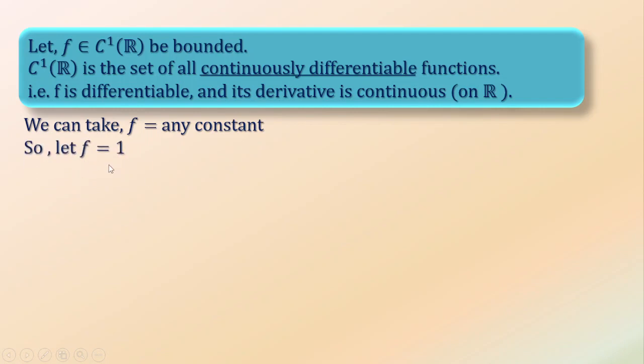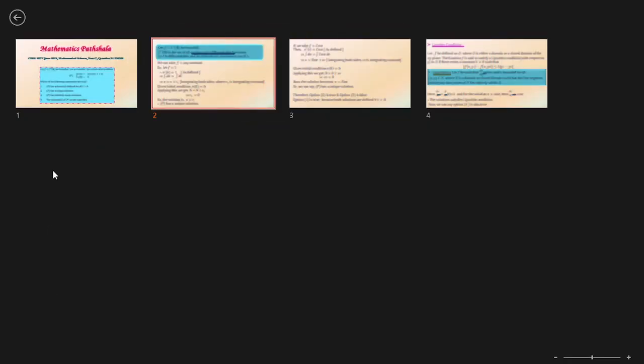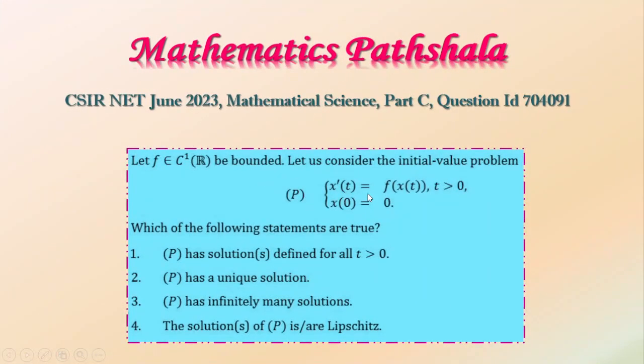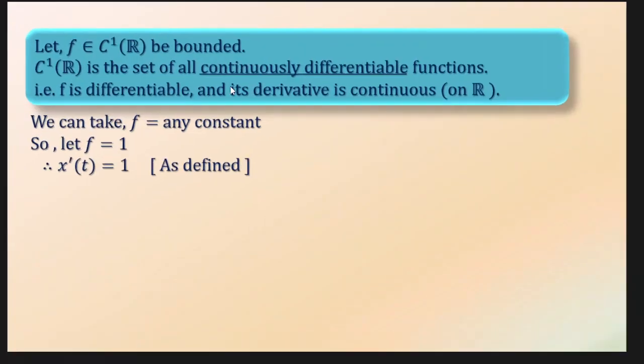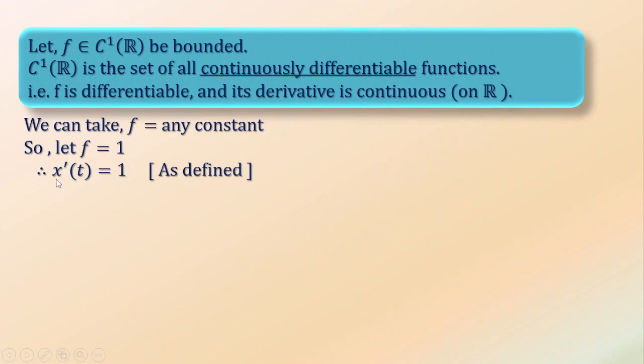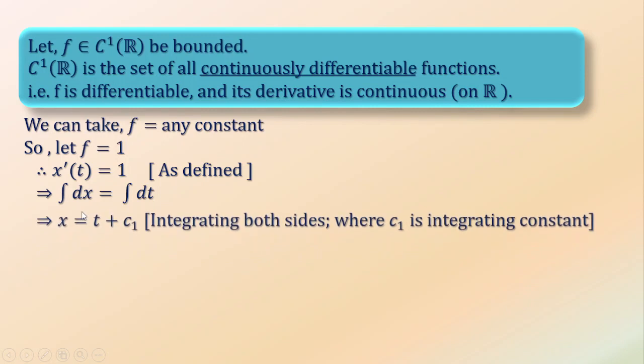So let us take f equals 1. Then x'(t) equals 1 as defined. We can integrate this: dx equals dt. By integrating both sides we get x equals t plus c₁ where c₁ is integrating constant.